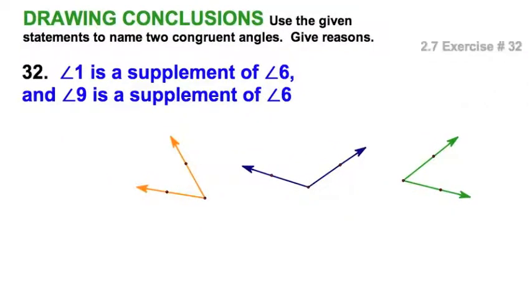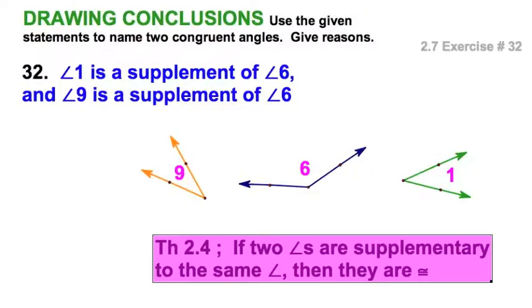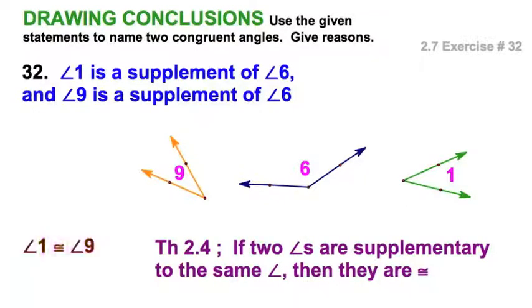Here we go with exercise 32. Well, let me look at this picture. One is a supplement of six. I've got three angles drawn here. If I drew them like this, I could say, hmm, one is a supplement of six. I'm going to make the green one angle 1. I'm going to make angle 6 the blue one. And it says that nine is also a supplement of six. Well, that looks like a feasible picture. So the orange is supplementary to the blue. And the green is also supplementary to the blue. If nine is supplementary to six, one is supplementary to six, it looks like the orange and the green angle have a relationship. And I would say that they are congruent. So angle 1 is congruent to angle 9 because of theorem 2.4. If two angles, that's one and nine in this case, are supplementary to the same angle, angle 6, then they are congruent.